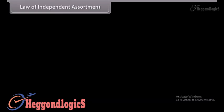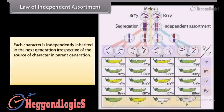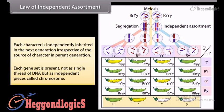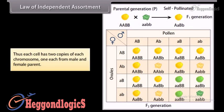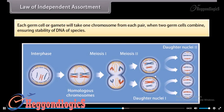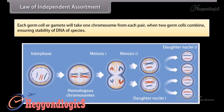The law of independent assortment states that each character is independently inherited in the next generation, irrespective of the source of that character in the parent generation. Each gene set is present not as a single thread of DNA but as independent pieces called chromosomes. Thus each cell has two copies of each chromosome — one each from the male and female parent. Each germ cell or gamete takes one chromosome from each pair when two germ cells combine, ensuring the stability of the DNA of the species.